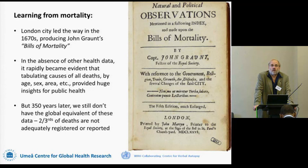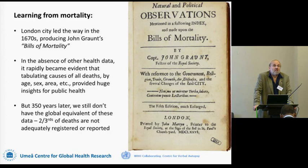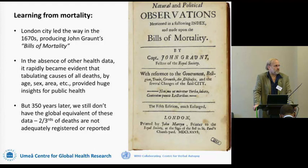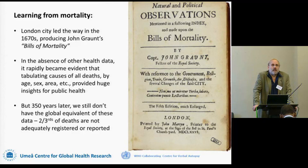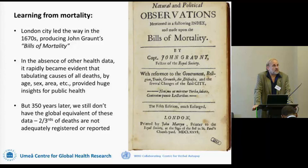John Graunt published the so-called Bills of Mortality, only really covering the City of London, but it was at least a starting point. About 100 years later, in Sweden, Argentin got to the point of doing the same thing for the whole country, and that was another significant scale-up from just one city to mortality statistics for a whole country.